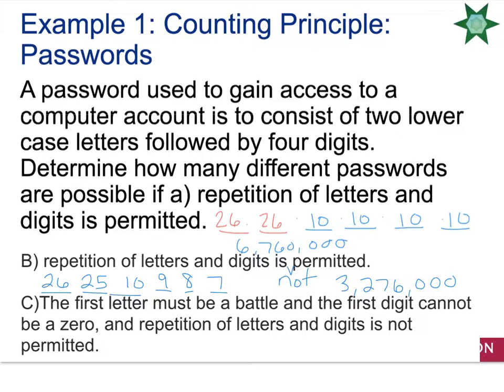Let's look at the last example. We're having a password for our computer. The first letter must be a vowel. The first letter must be a vowel and the first digit cannot be a zero. And repetition of letters and digits is not permitted. So we have two letters. Our first digit must be a vowel. There's only five vowels in our alphabet: A, E, I, O, and U. So the first digit must be five. It only has five options.